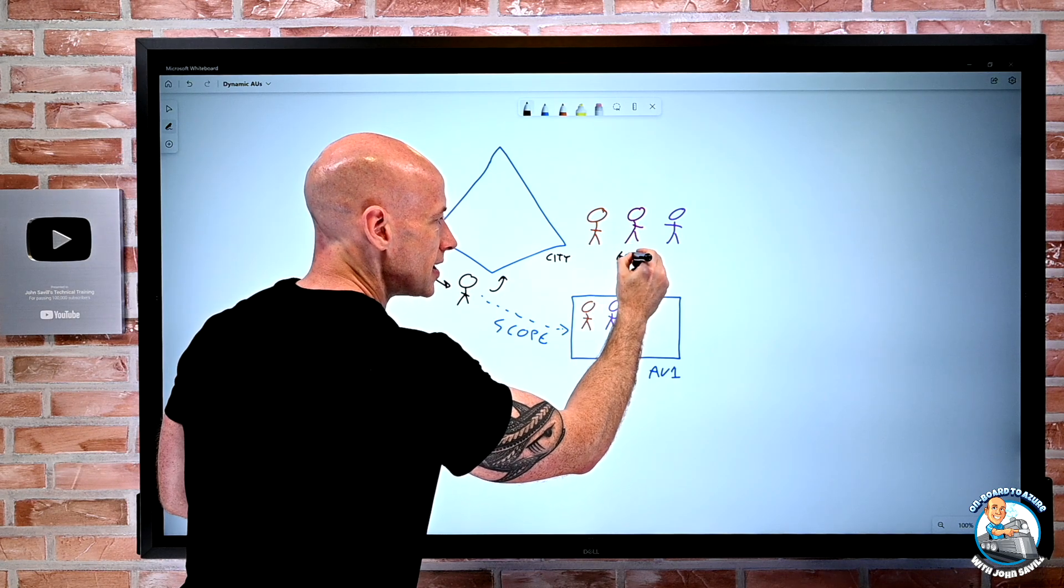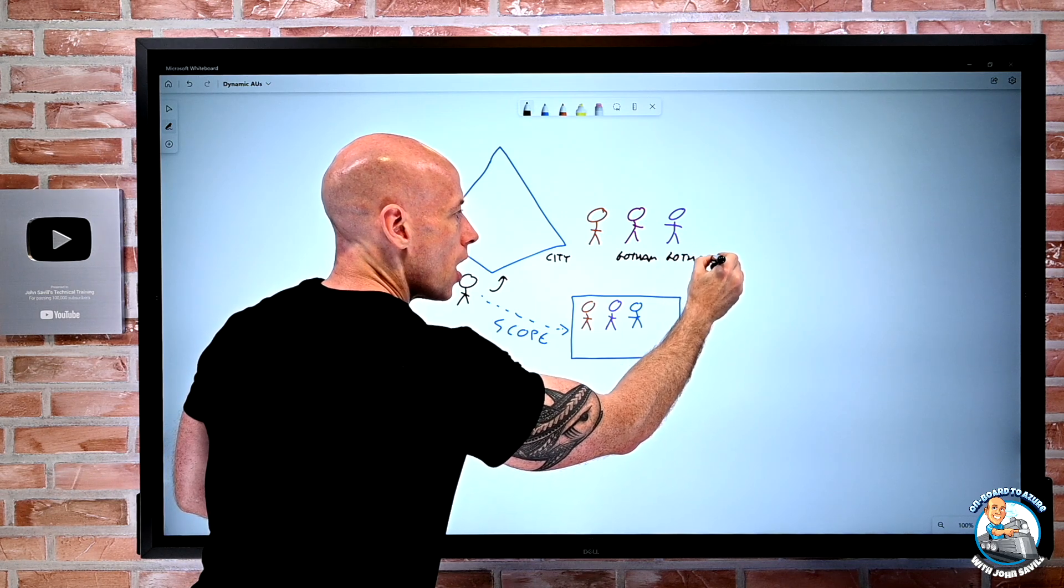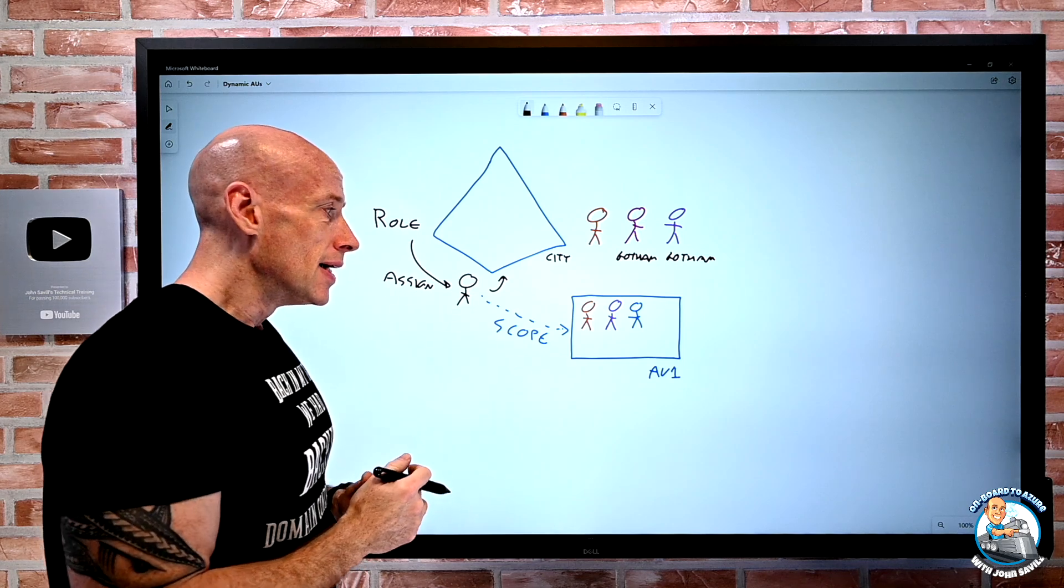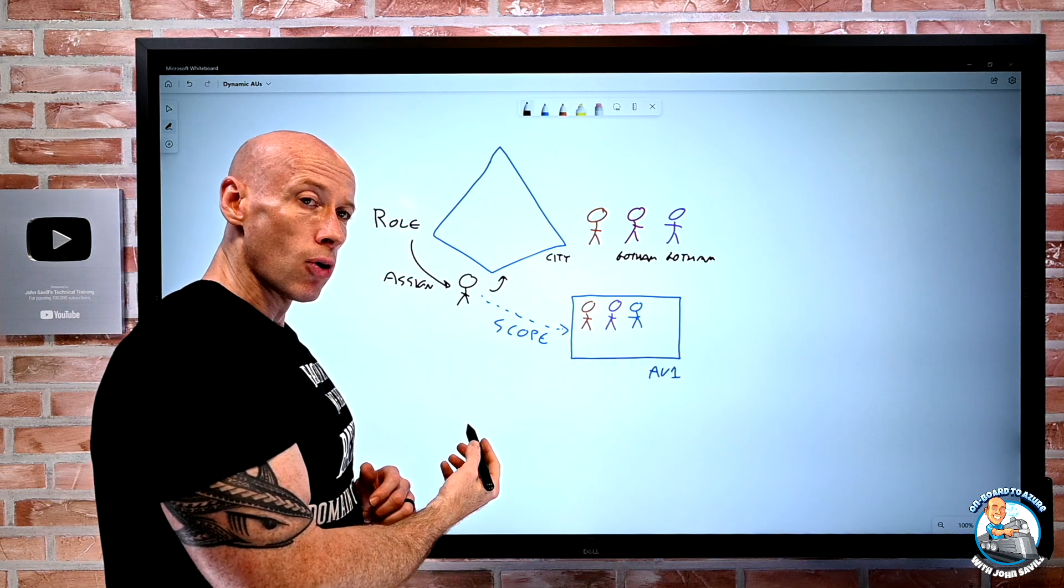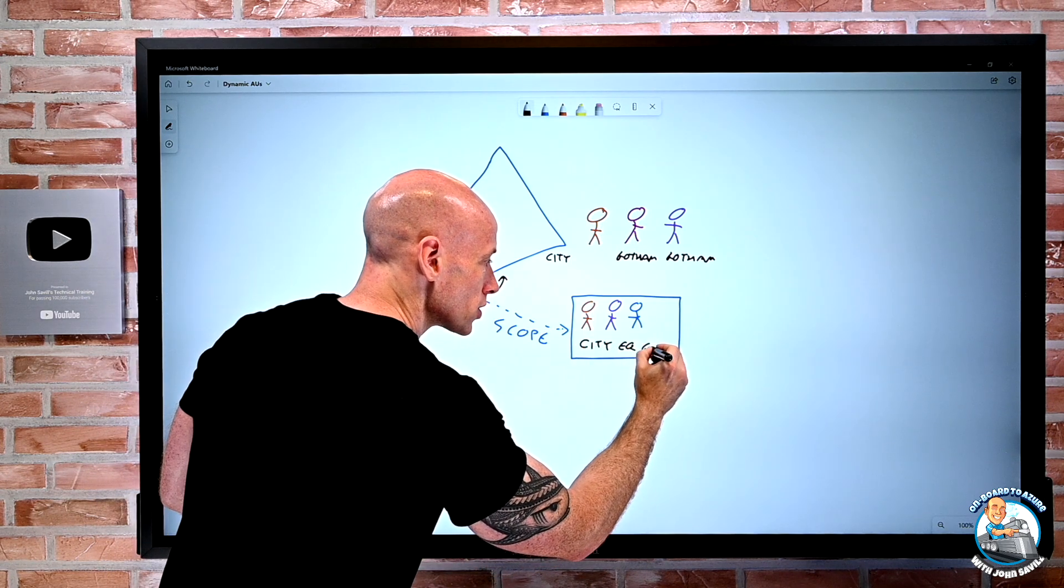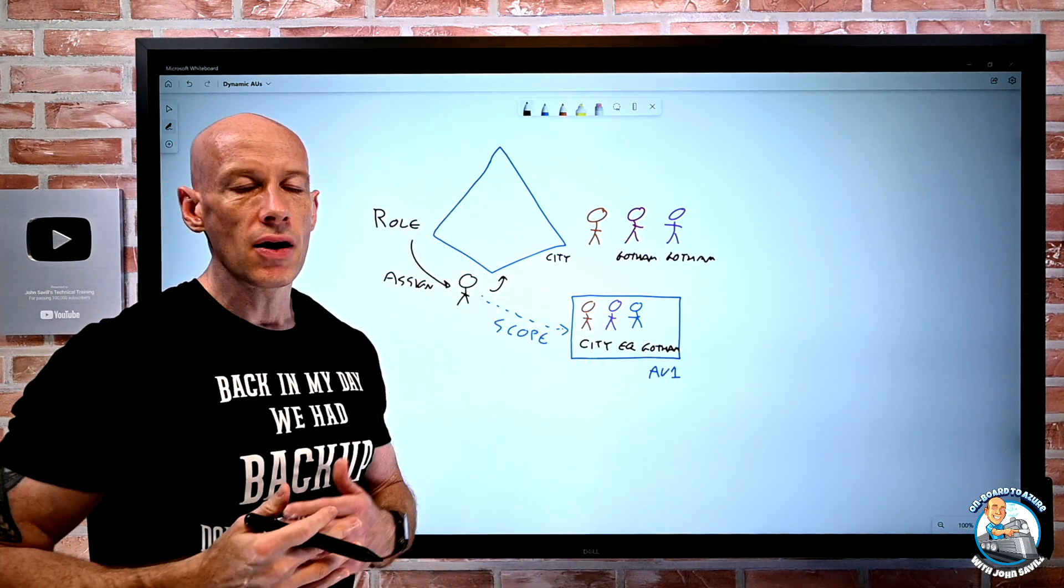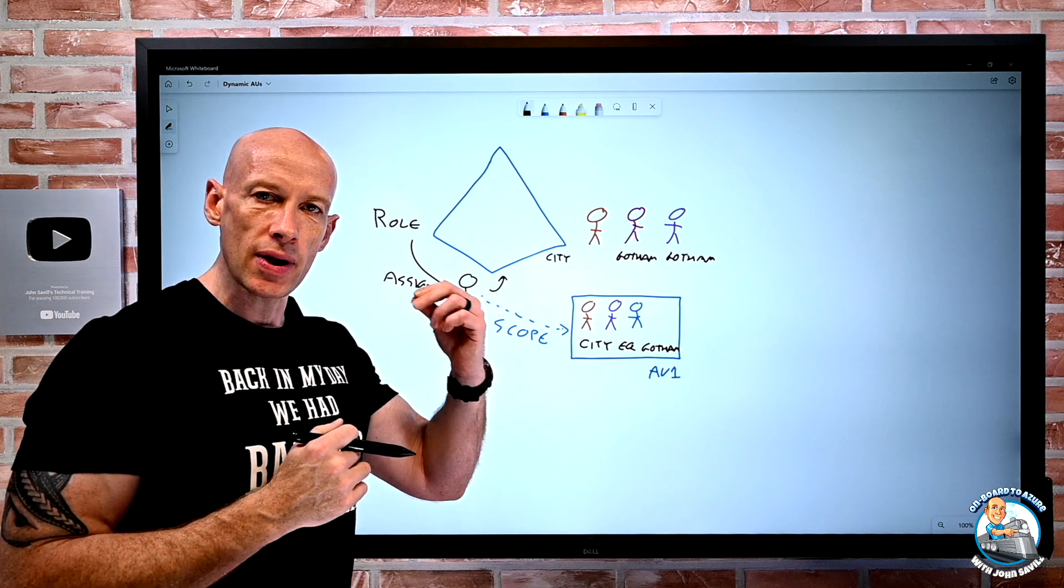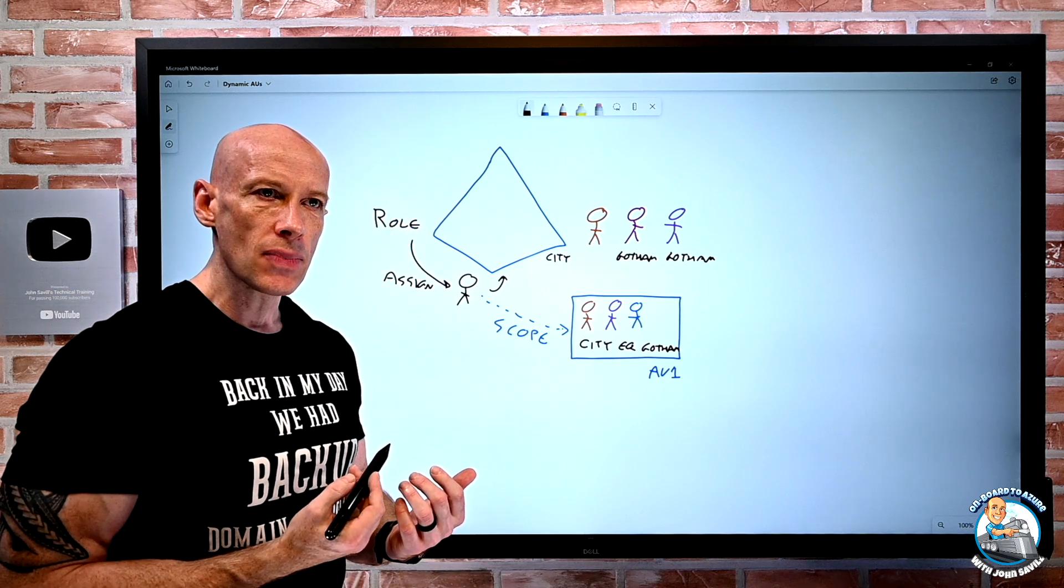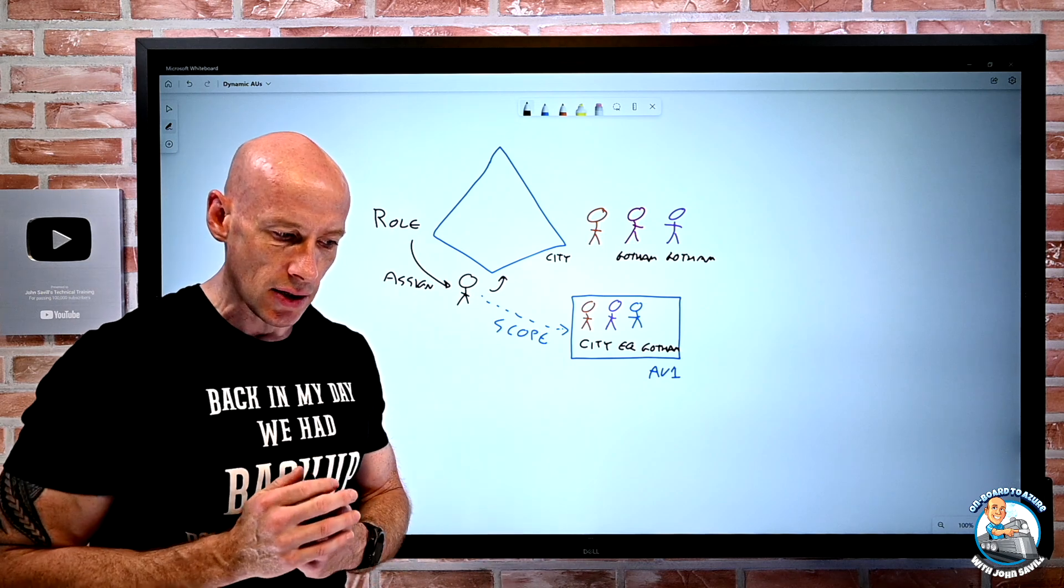For example, this city is Gotham. It's Batman. And this one is Gotham as well. I could now create an assignment rule for dynamic user to say, instead of me manually assigning people, the city equals Gotham. And now as people move in or out of that city based on the attribute in their Azure AD account, they'll get added and removed to that administrative unit. That's just one example. It could be department. It could be custom attributes. There's many different things I can do here.